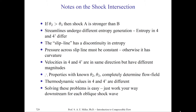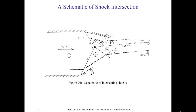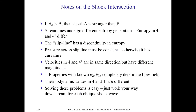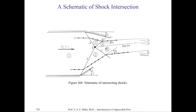Let's make some notes about this diagram. If theta2 is greater than theta3, or vice versa, then the shock at A is stronger than B, or vice versa. For example, if theta2 is greater than theta3, shock A is stronger and has larger total pressure loss than the shock across B. The streamlines will undergo different entropy generation. The entropy in 4 and 4 prime are different because the wave angles are different and have correspondingly different entropy generations. So the entropy in regions 1, 2, 3, 4, and 4 prime are all likely different in general.